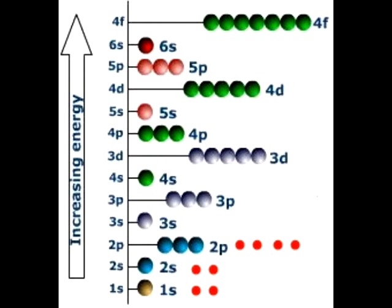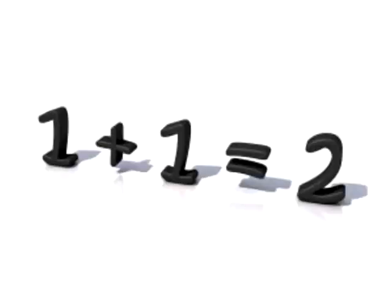For example, oxygen has filled its 1s orbital with two electrons, then his 2s orbital with another two electrons, but fails to fill its 2p orbital with only four of the six electrons needed. 2 plus 2 plus 4 is 8, and that is the atomic number of oxygen.